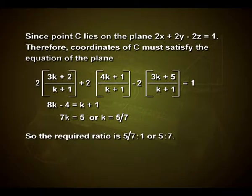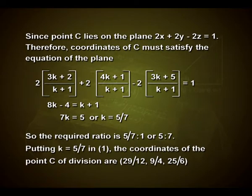So the required ratio is 5/7 : 1, or 5 : 7. Putting k = 5/7 in the first expression, the coordinates of the point C of division are (29/12, 9/4, 25/6).